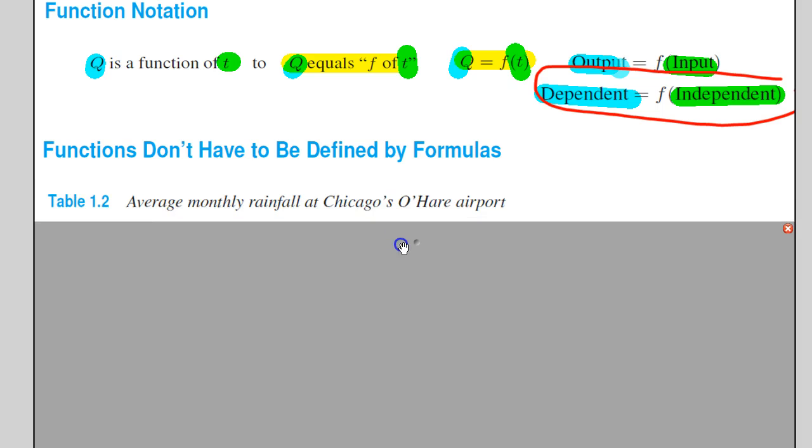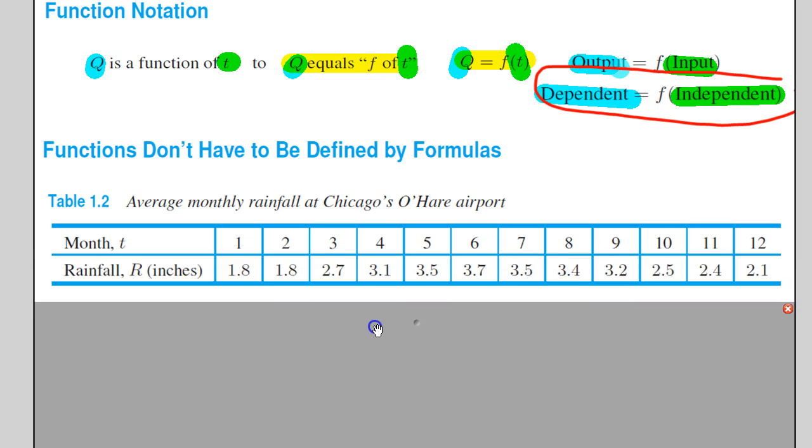Now, I do want to mention that functions don't have to be defined by formulas. Here's an example with the monthly rainfall at the Chicago O'Hare Airport. There is a special relationship between the month and the amount of rainfall that occurs. But that relationship can't be defined exactly by a formula. It doesn't mean it's not a function. It just means that the relationship cannot be described by a formula.